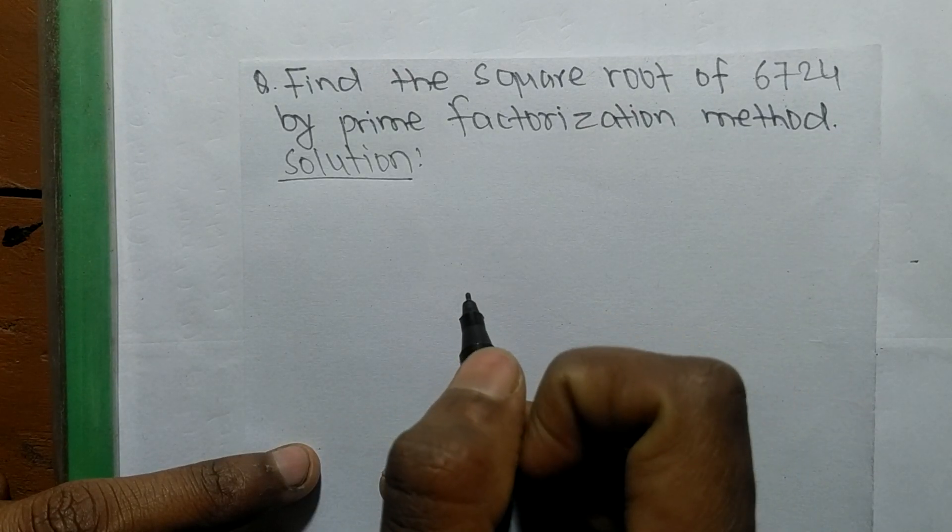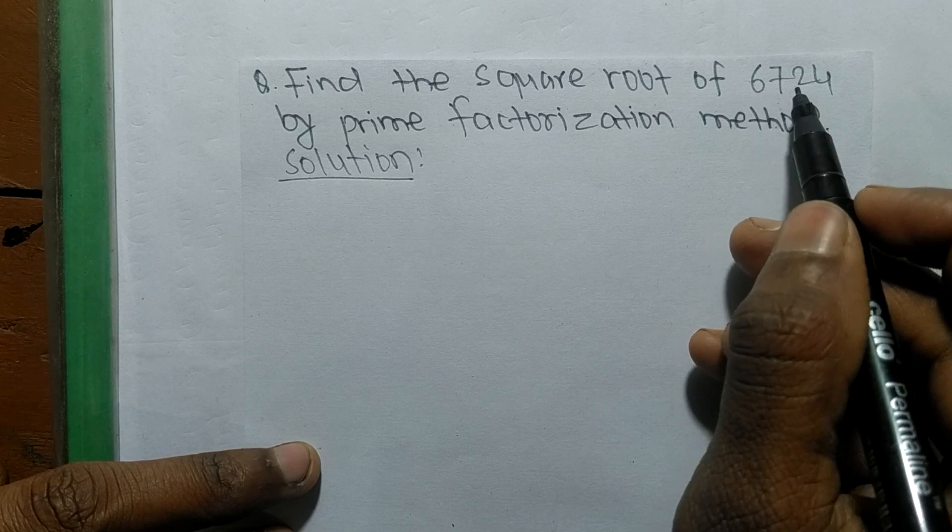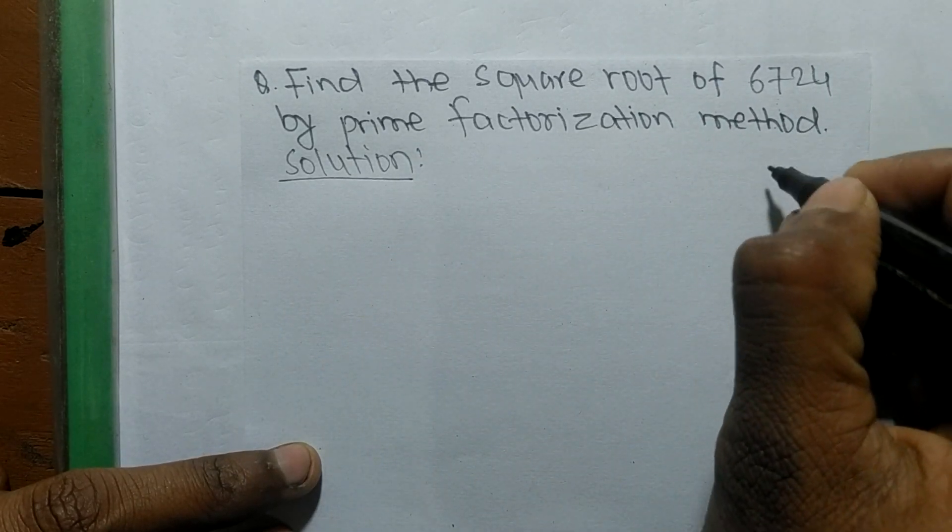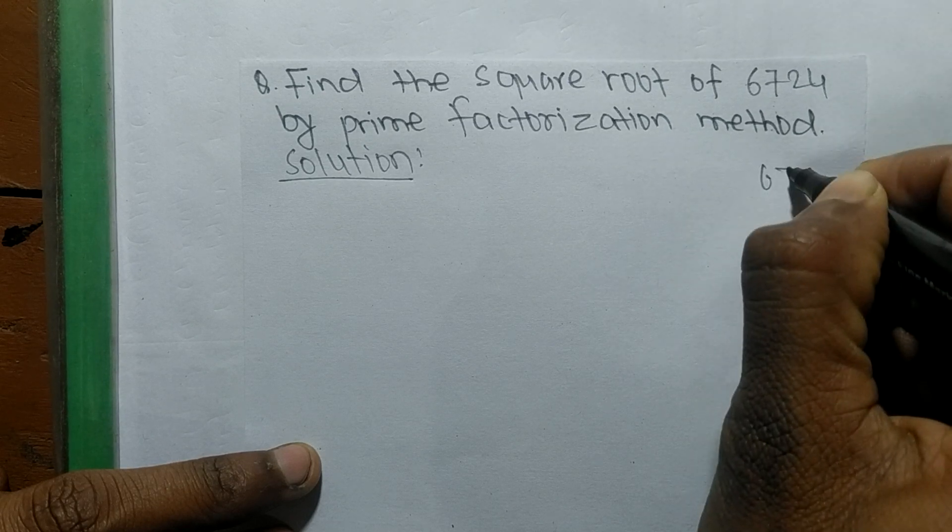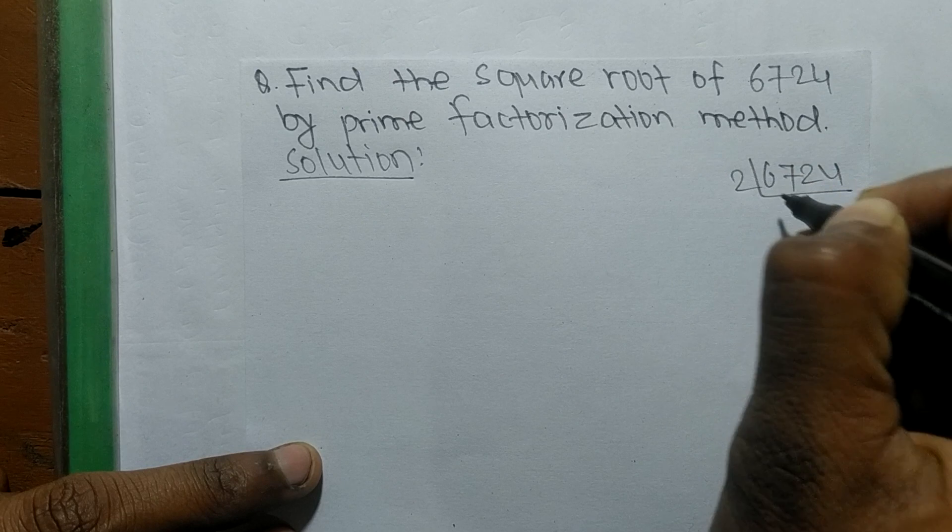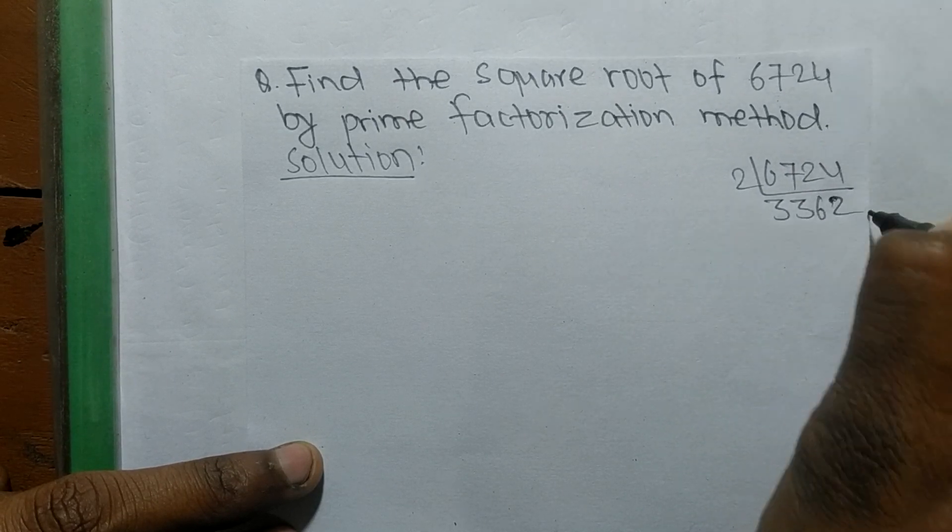Today in this video, we shall learn to find the square root of 6724 by prime factorization method. We shall first find out the prime factors of 6724: 2 times 3362.